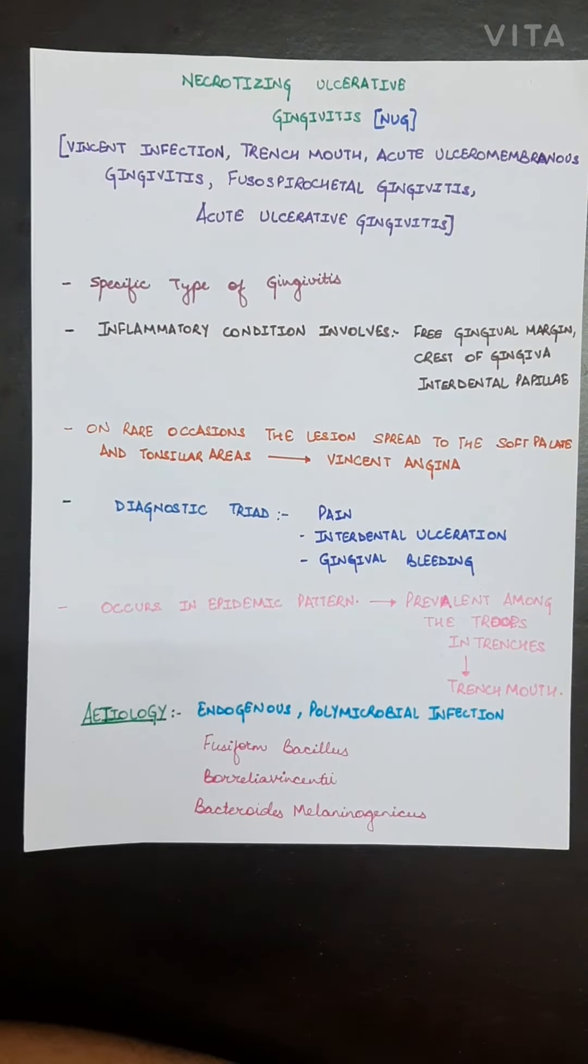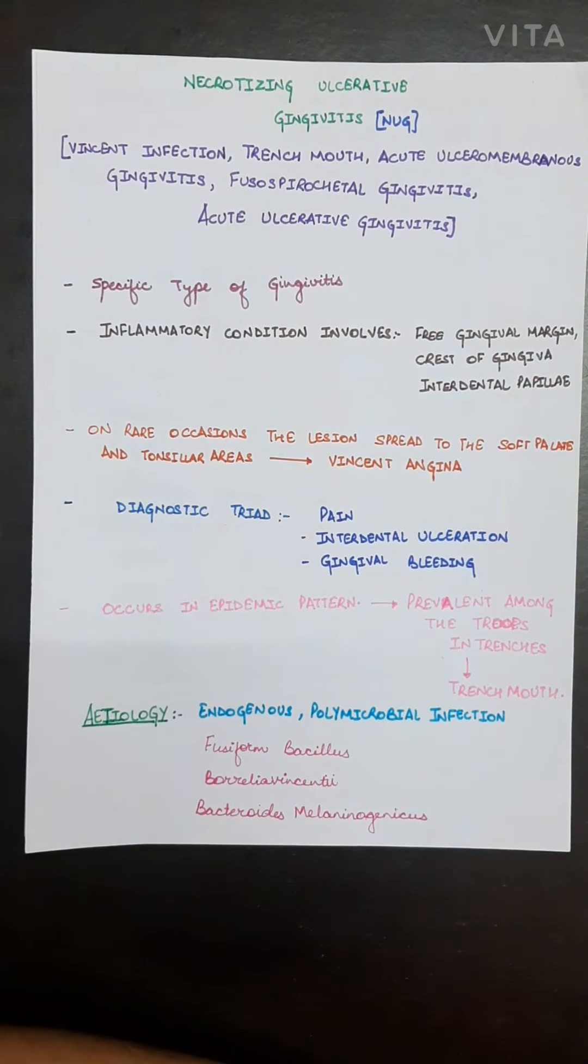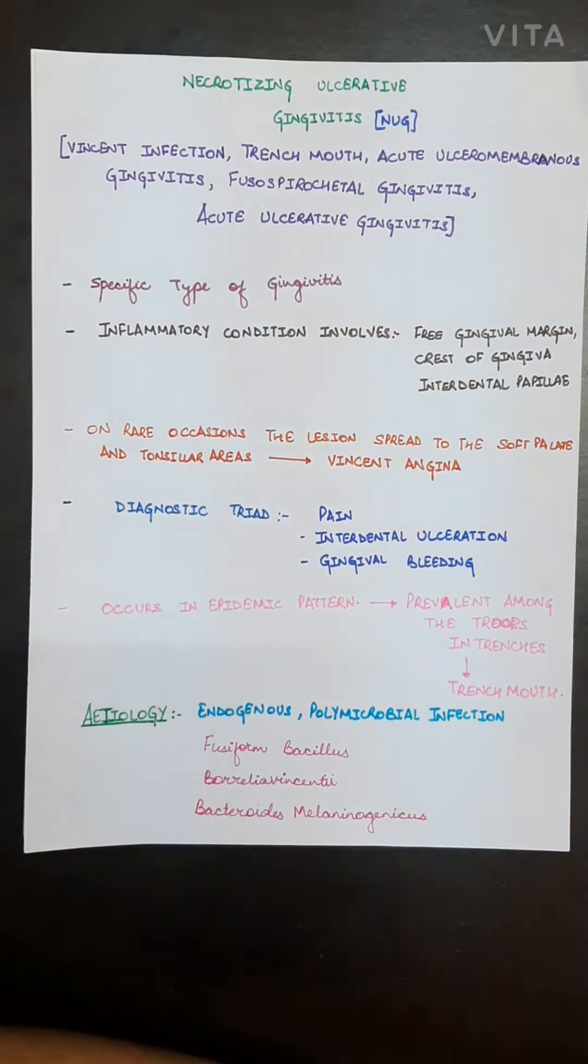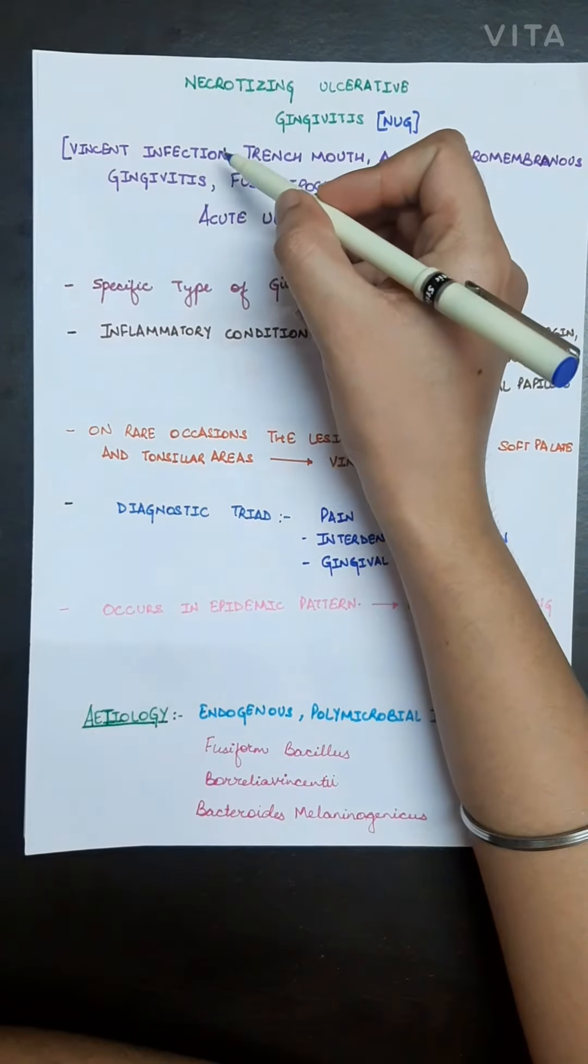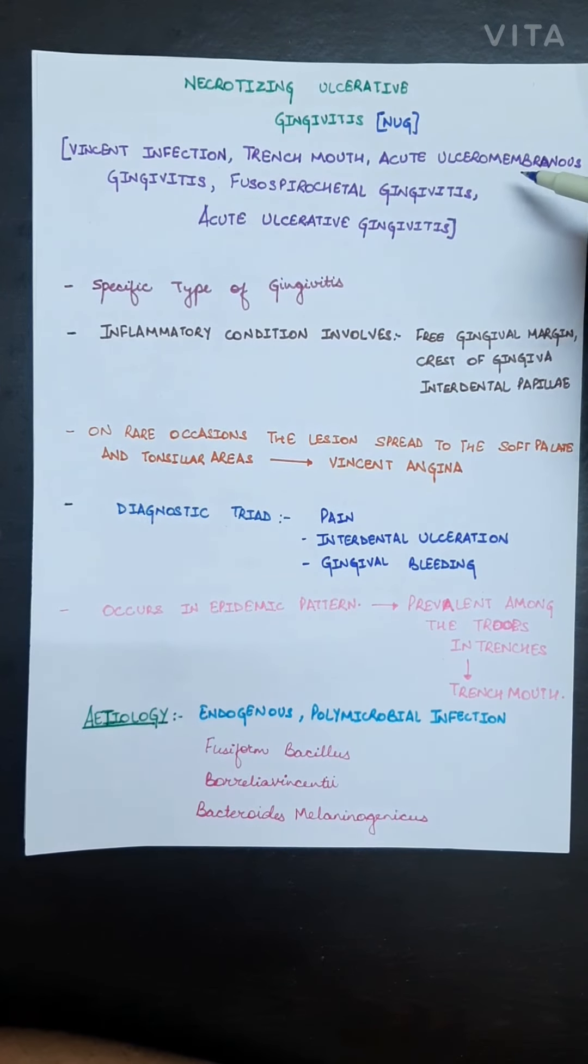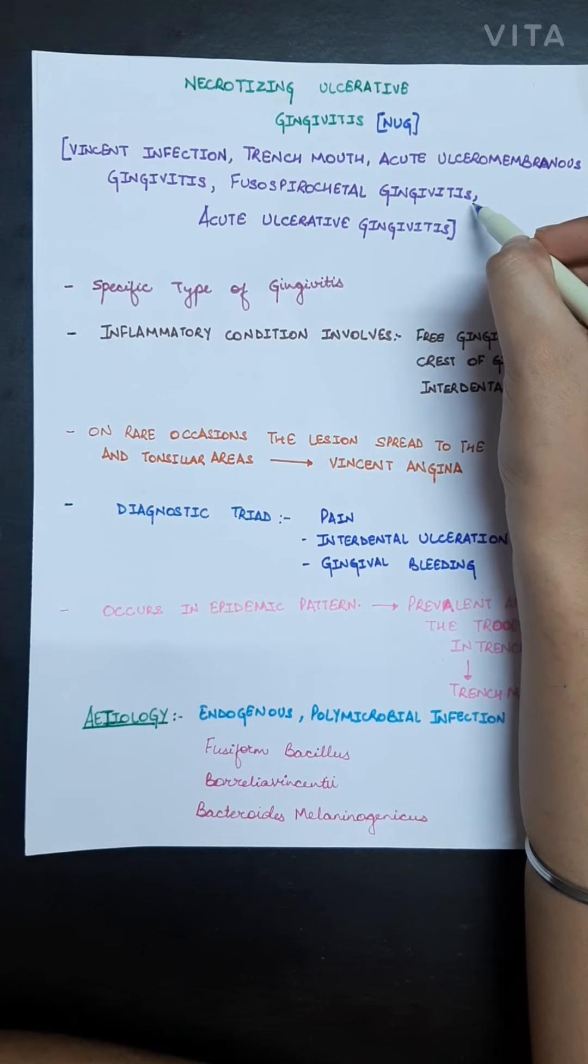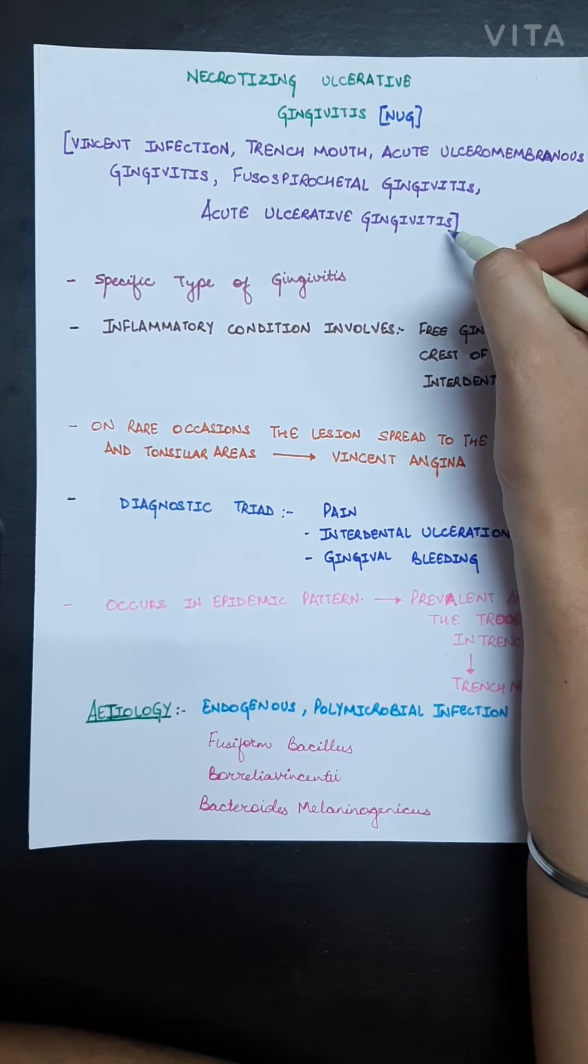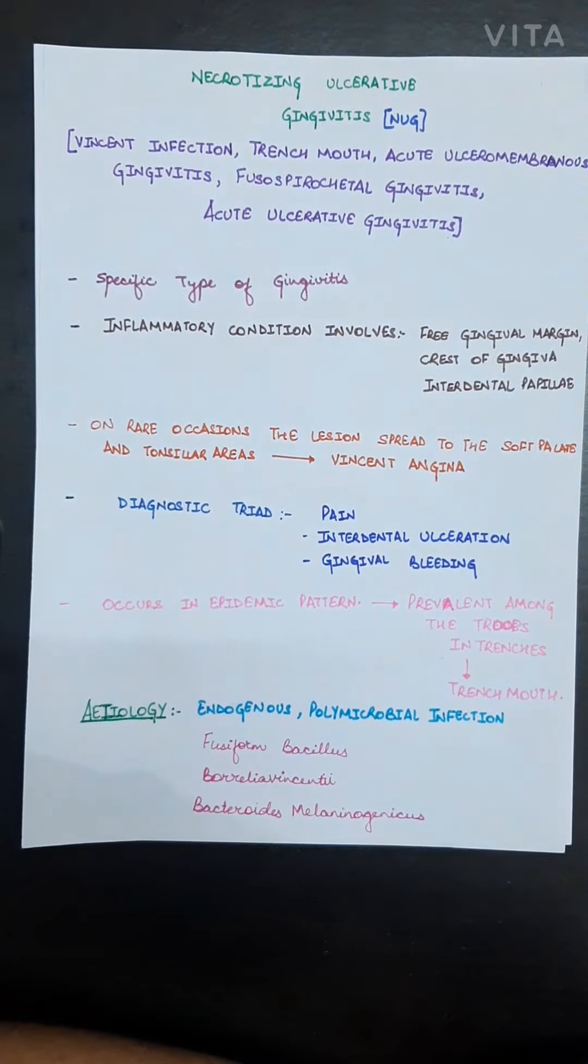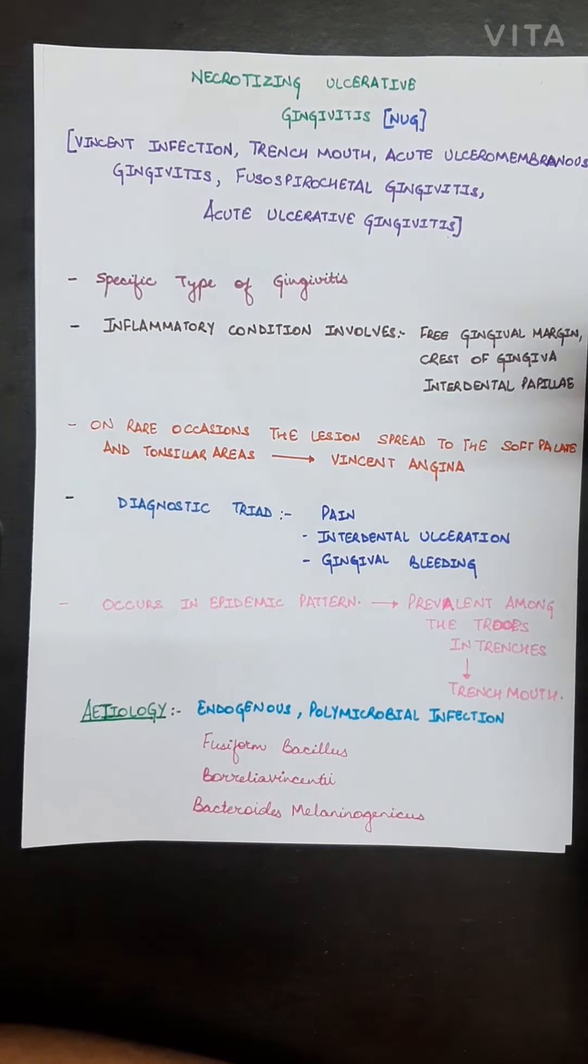Hey all, today we are going to discuss necrotizing ulcerative gingivitis, which is also known as Vincent infection, trench mouth, acute ulceromembranous gingivitis, fusospirochetal gingivitis, and acute ulcerative gingivitis. It is known by different names.